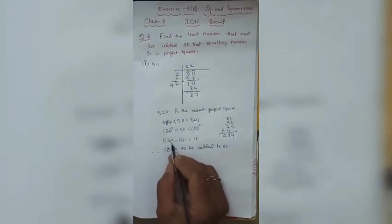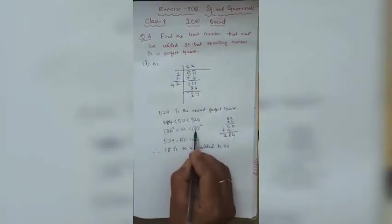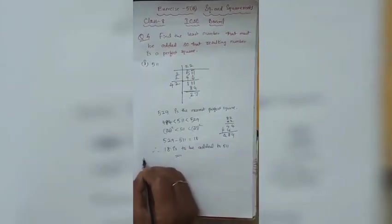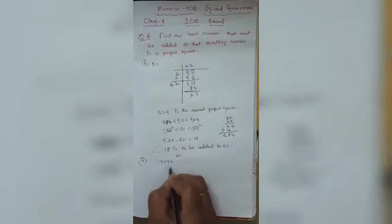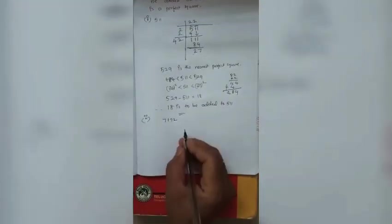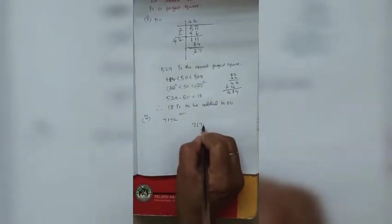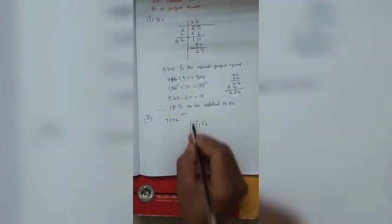So the answer is 18 added gives 529, whose square root is 23. Now we move on to another question: 7172. We place the bar from the right side over pairs of digits.